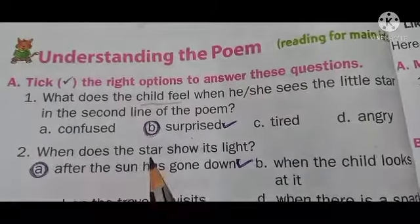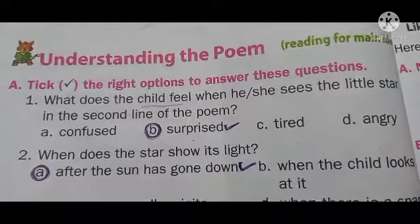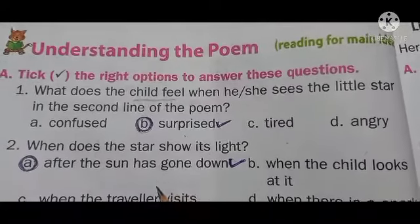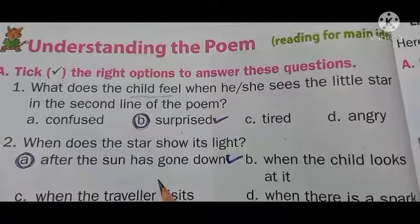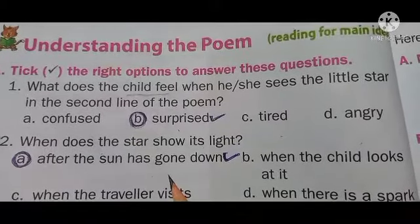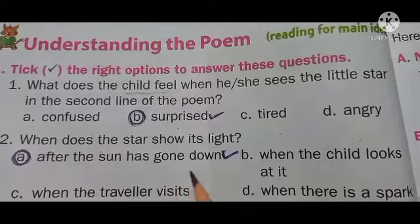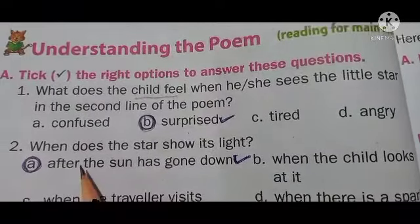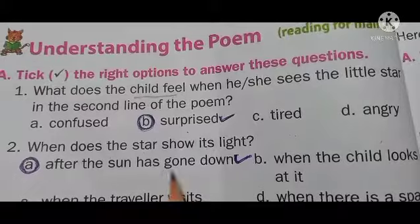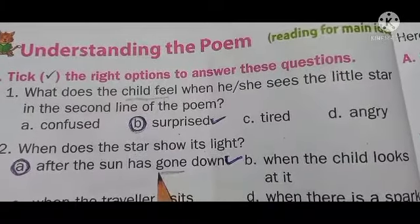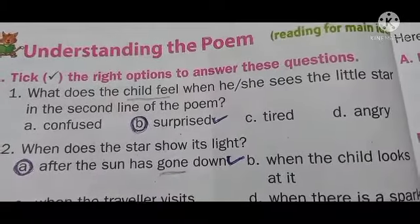Next: when does the star show its light? When will the stars come in the sky? After the sun has gone down — in the night time. After the sunset, the stars will come.